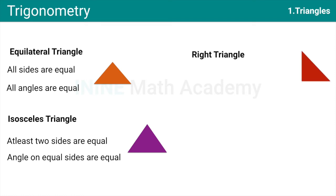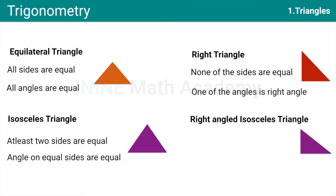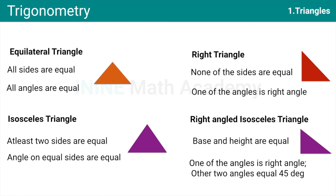Now, the right triangle, which is more essential from understanding trigonometry. None of the sides are equal and one of the angles is right angle, that is 90 degree. Now, right angled isosceles Triangle. In this case, base and height are equal. One of the angles is right angle. Other two angles equal 45 degree.